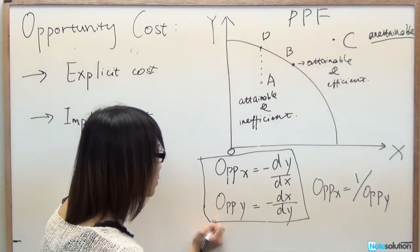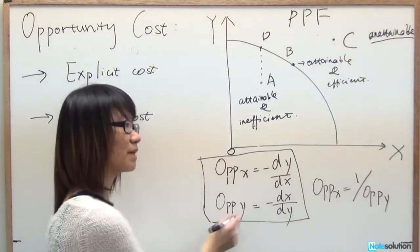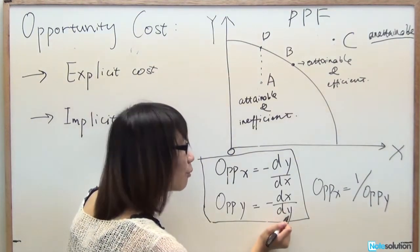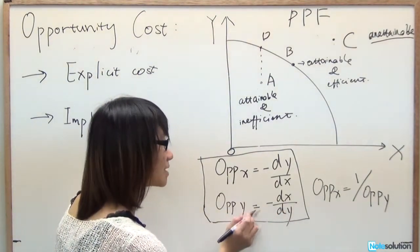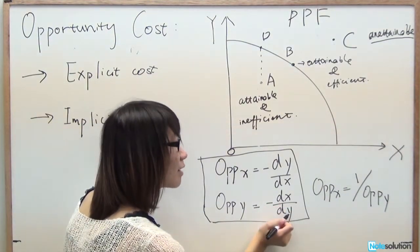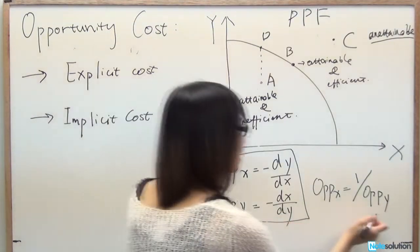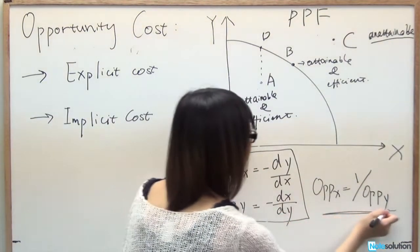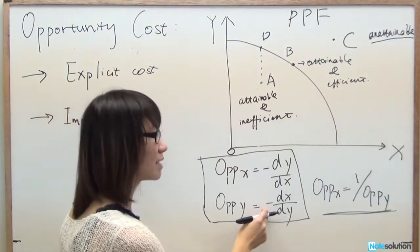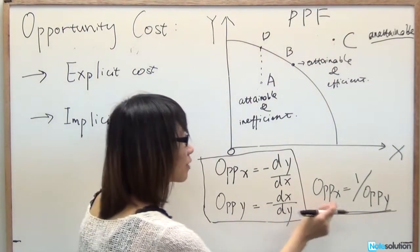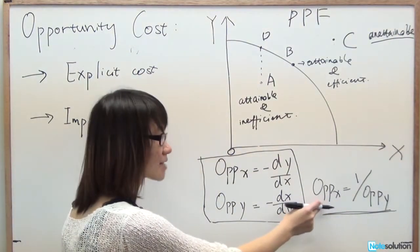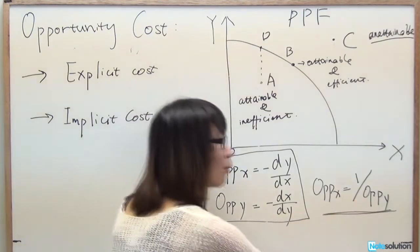The opportunity cost of Y is the amount of X we give up to obtain a little bit more of Y, equal to the negative of dX/dY. Since dY/dX equals 1 over dX/dY, the opportunity cost of X equals 1 over the opportunity cost of Y.